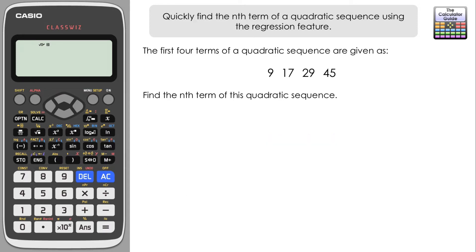We're given the first four terms of a quadratic sequence: 9, 17, 29, and 45, and we've got to find the nth term of this particular quadratic sequence.